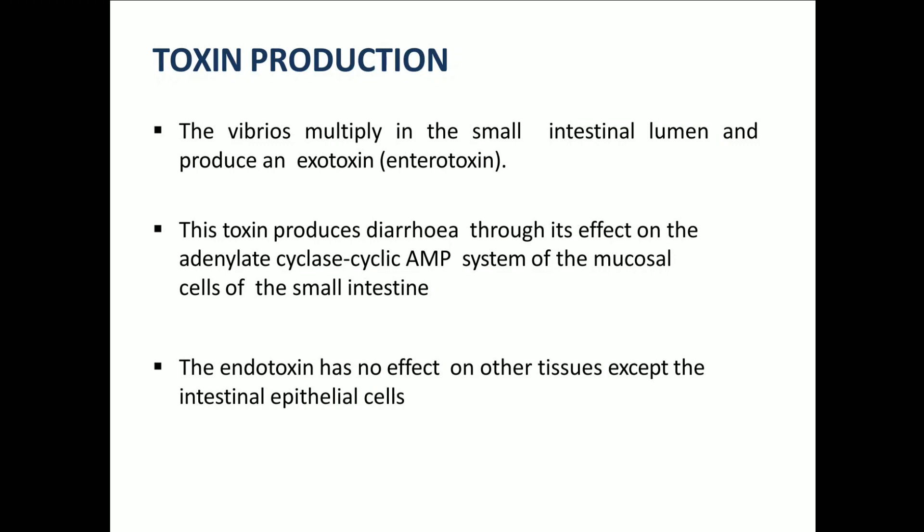Coming to the toxin production of this organism: Vibrio cholerae mainly infects the intestines. Vibrios multiply in the small intestinal lumen and produce an exotoxin. This toxin produces diarrhea through its effect on the adenylate cyclase — cyclic AMP system of mucosal cells of the small intestine. In simple words, this toxin affects the mucosal cells of the small intestine, leading to acute diarrhea. The endotoxin has no effect on other tissues except on the intestinal epithelial cells.